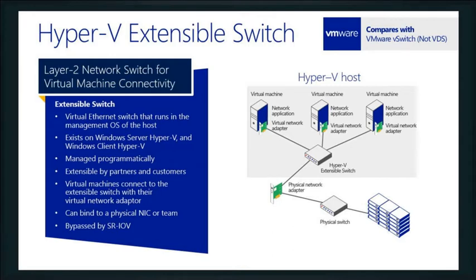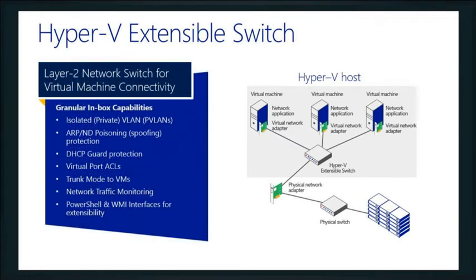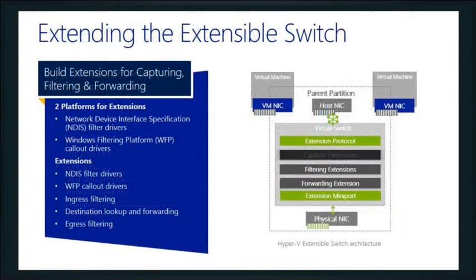What makes us different is how we approach the same capabilities. We do bind to a physical NIC or a team, and we can bypass it if we're using SR-IOV. We can put DHCP guard protection on the switch. If you're not familiar with DHCP guard, it's designed to help protect against man-in-the-middle attacks — if somebody has a rogue DHCP server sitting around to intercept your requests, this prevents that. We can also do network traffic monitoring and use PowerShell and WMI interfaces to do all kinds of things inside the switch.